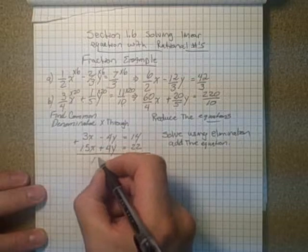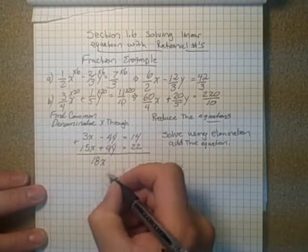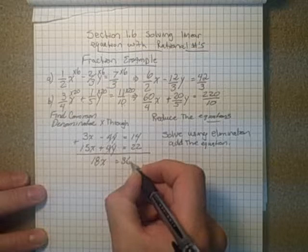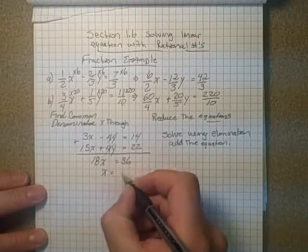So I have 18x, that comes to 0, equals 36, so x is equal to 2.